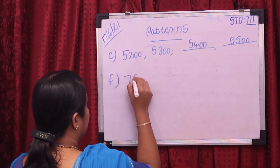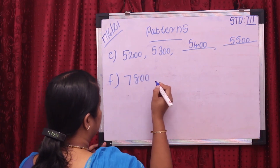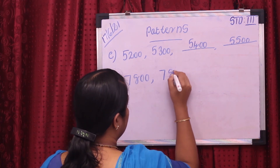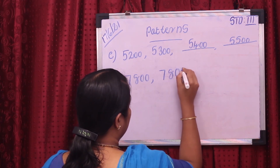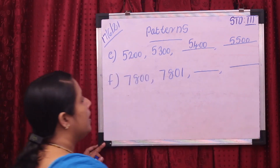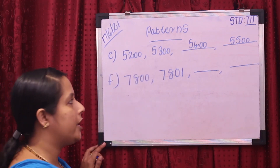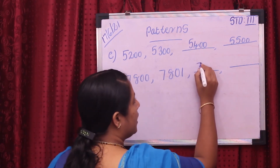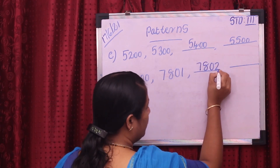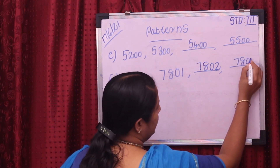Next pattern: 7,800, then 7,801. The next is 7,802, next is 7,803.